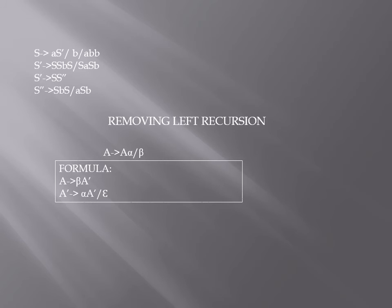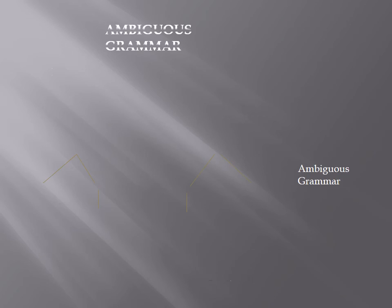After removing left recursion, we discuss removing ambiguity. An ambiguous grammar is one that produces more than one parse tree for some sentence — that is the definition. Let's take an example.